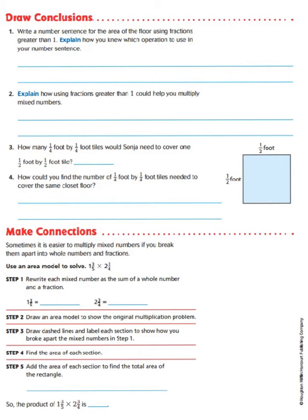Let's draw some conclusions based upon what we have done so far. It says to write a number sentence for the area of the floor using fractions greater than 1. Then it says to explain how you knew which operations to use in your number sentence. Well, our number sentence for the area of the floor would be 5/2 times 7/2 equals 35/4. Since I am finding the area of a rectangle, I use multiplication.